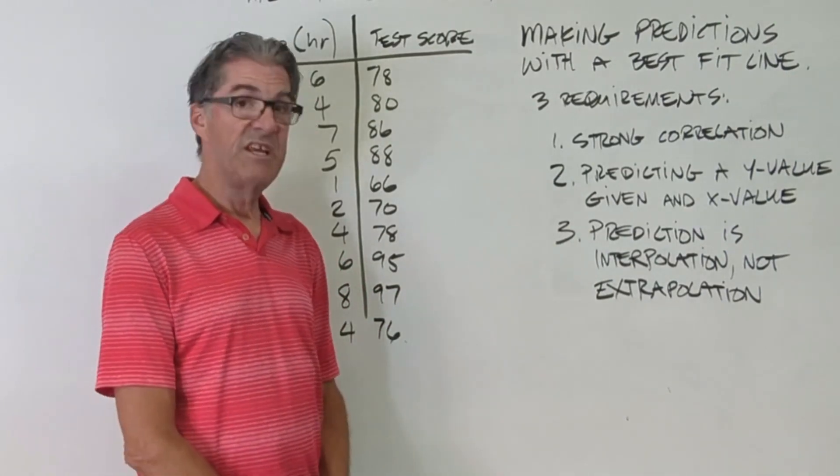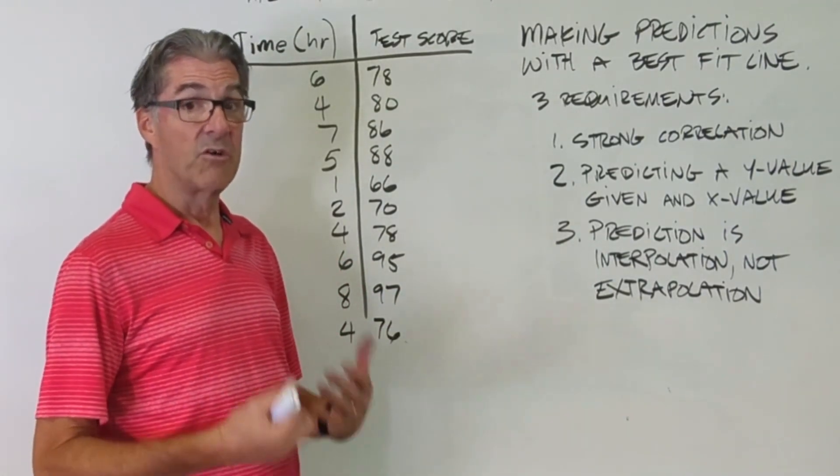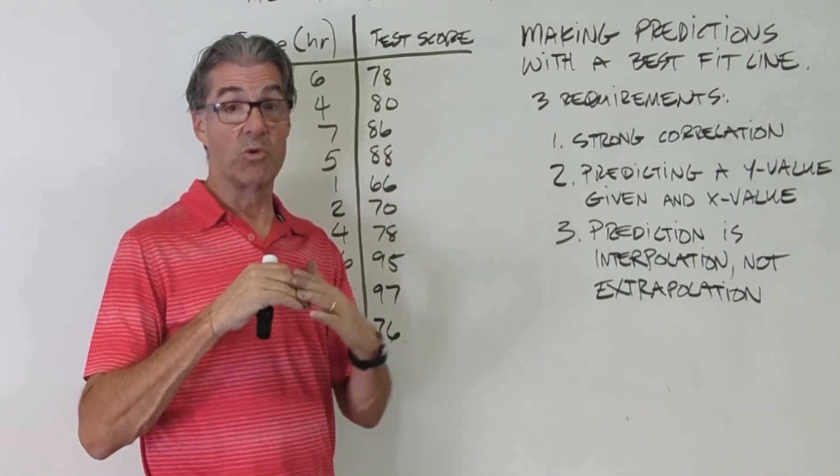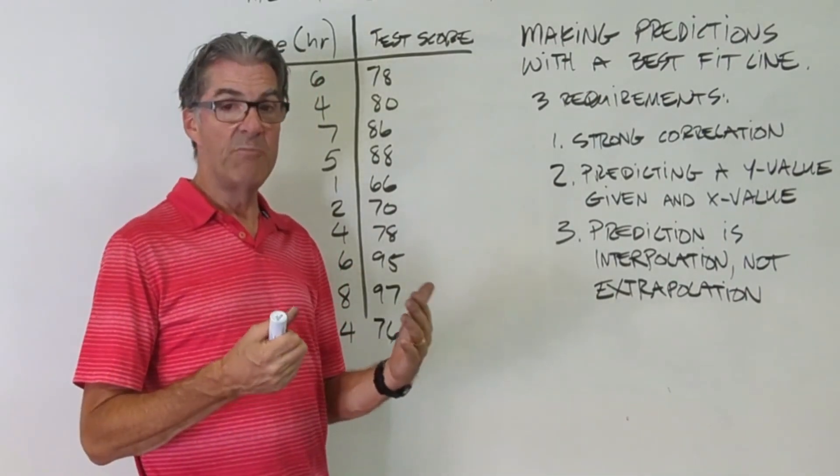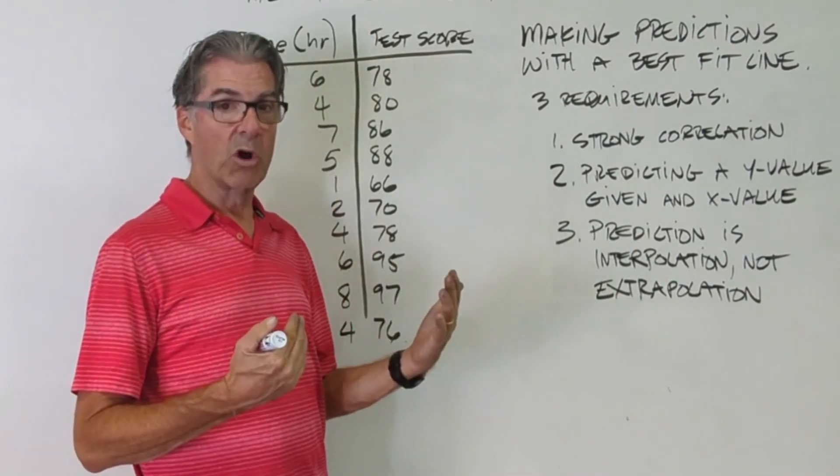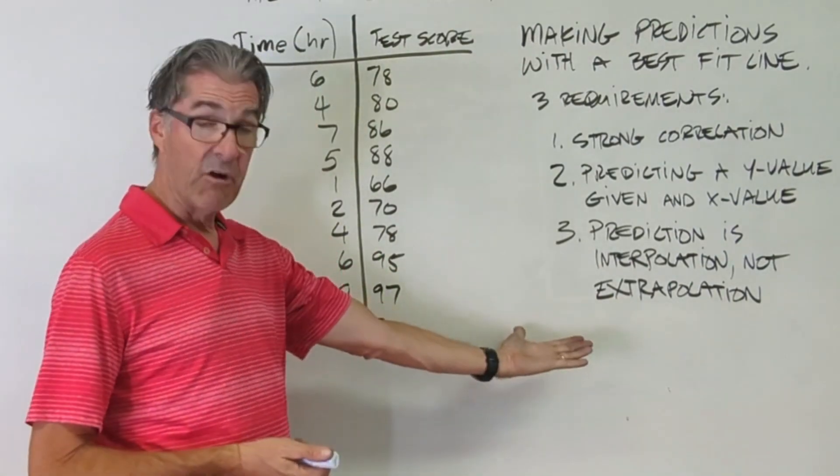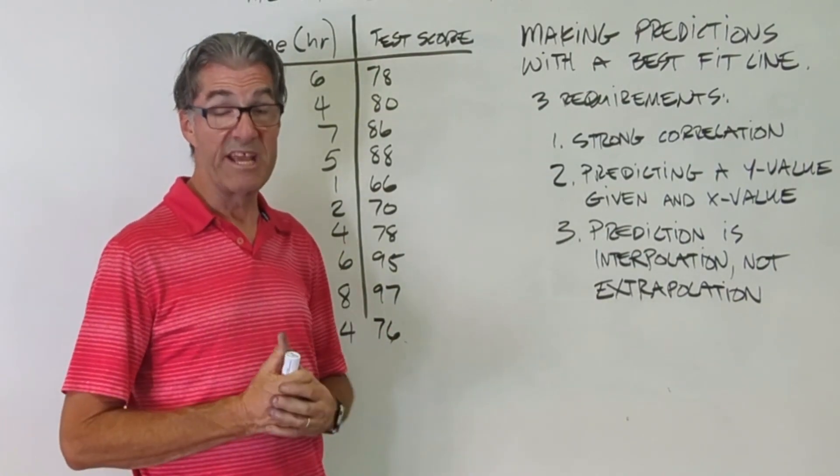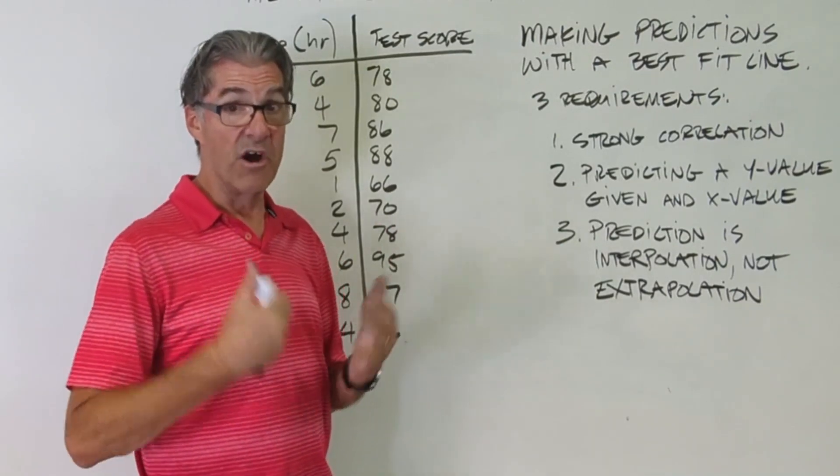Third condition is the prediction is interpolation, not extrapolation. Now interpolation means you're predicting within your data set. So within the data set from the scatter plot. Extrapolation means you might be predicting what a score would be if someone studied for 20 hours. Well, we don't have 20 hours on our graph, so we can't use the graph to predict 20 hours. So the same thing with any scatter plot. Extrapolation is a no-no.